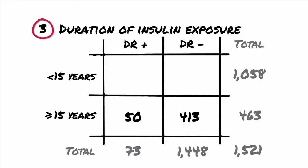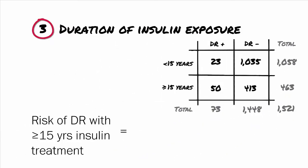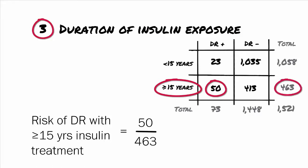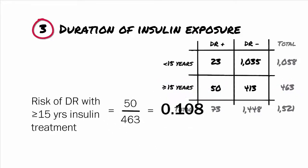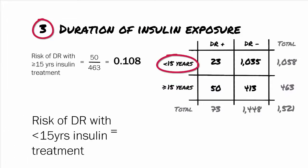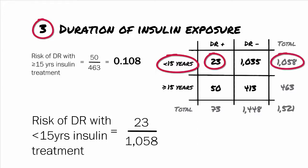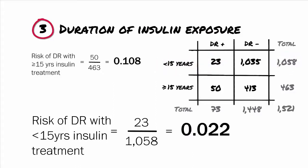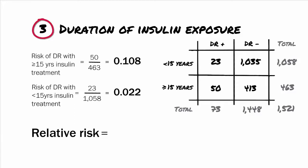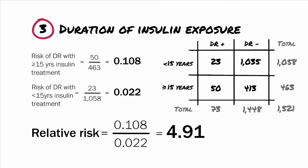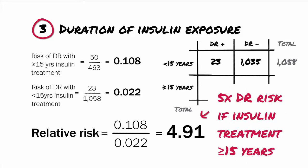1,058 have taken insulin for less than 15 years; 23 of these participants developed DR and 1,035 did not. To get the risk of DR in participants who had taken insulin for 15 years or more, the exposed population, we divide 50, the number with DR and longer insulin treatment, by 463, the total number with longer insulin treatment. This equals 0.108. For the unexposed population, we divide 23 by 1,058, the total number with shorter insulin treatment. This equals 0.022. So the relative risk is 0.108 divided by 0.022, which equals 4.91 — approximately 5 times the risk of developing DR if you have taken insulin for 15 years or more.